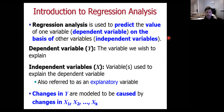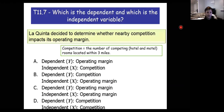In the context of our La Quinta motor inn example, the dependent variable is the operating margin and the independent variable is the quantity of competition. We're going to start with a simple case of only one regressor — one X variable on the right-hand side — and that is competition. Just like any inferential statistic in this course, the goal is to use sample estimates in order to figure out our best guess at the population values of those estimators.